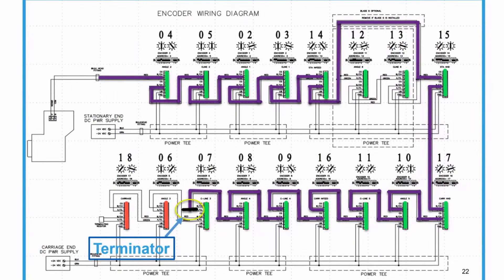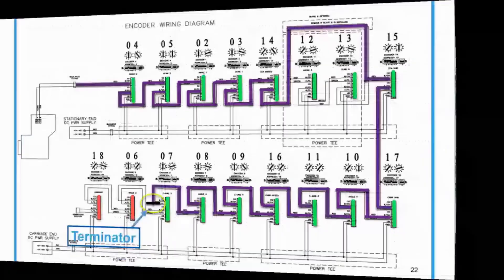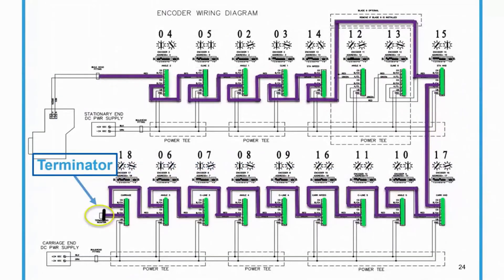We're down to two encoders now after I moved the terminator. So our problem at this point is one of these two encoders. As you see in the video, what I found was one of the cables had pins that had gotten damaged — that was the cable going from angle three, and that was causing it so nothing else would work when we had that terminator at the very end. When we have it all fixed, the flow is consistent all the way through, and our terminator is back at the end where we started. Now we're ready to get back into production.